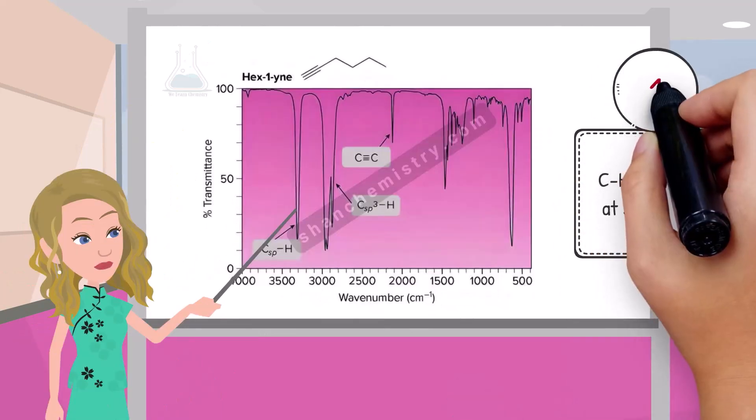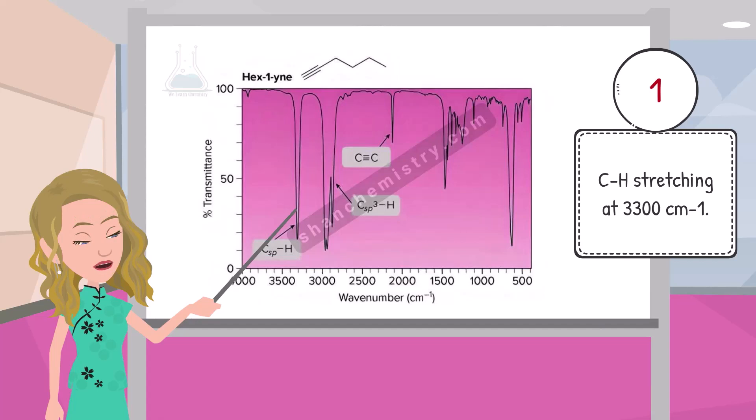The carbon atom in hexine is SP hybridized, and the CH stretching is observed at 3300 per cm.